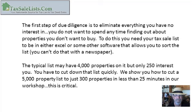The first step of due diligence is to eliminate everything you have no interest in. You don't want to spend any time finding out about properties you don't want to buy. To do this, you need your tax sale list to be in an Excel or some other software form that allows you to sort the list. You can't sort a list if it's just on a newspaper. A typical list may have 4,000 properties on it, but only 250 interest you. We show you how to cut a 5,000 property list to just 300 properties in less than 25 minutes in our workshop. This is a critical skill you need to have.